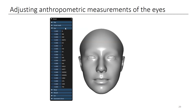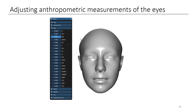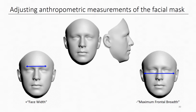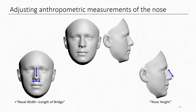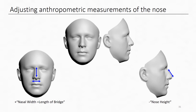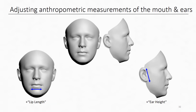We will now show results of adjusting the anthropometric measurements. Here is an example of editing eyes starting from the average female head. The slider of only one measurement is shown moving to facilitate identification of the specific measurement being edited. Keep in mind that the values of other measurements also change based on their correlation. Here is another example: adjusting the facial mask starting from the average male head on the top row. In this example, we are adjusting the nose, and this one is adjusting the mouth on the left side and ears on the right side, starting from the average male head.